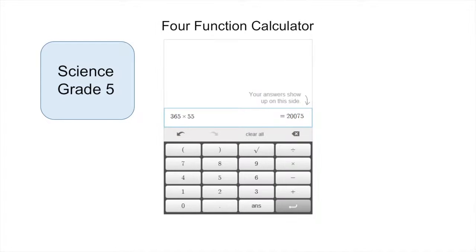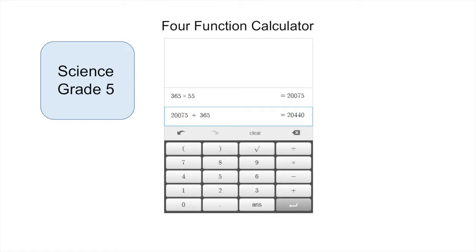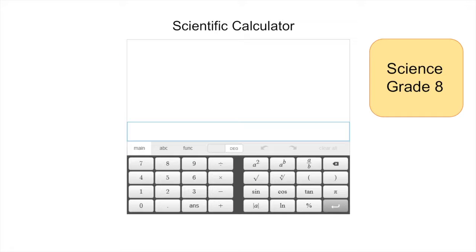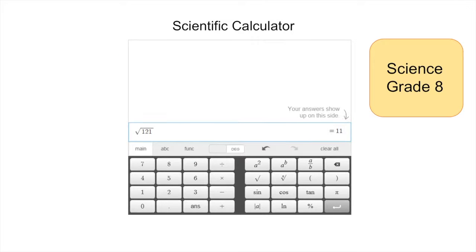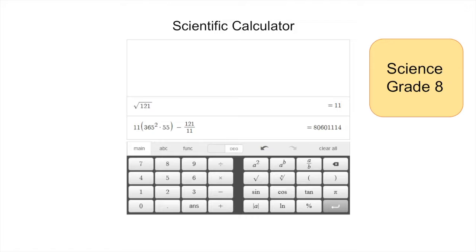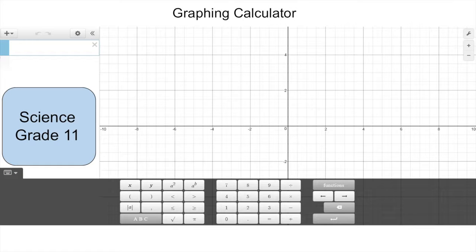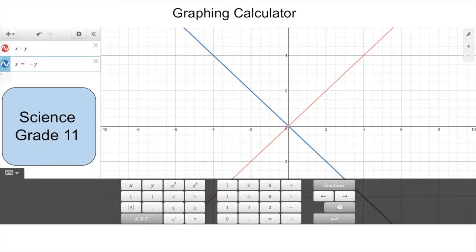The Desmos calculators will also be used for the statewide student assessments in science. In Connecticut, science tests are administered in grades 5, 8, and 11. Each of these grade levels will be using a different Desmos calculator. Grade 5 students will have access to the Desmos four-function calculator, while grade 8 students will have access to the Desmos scientific calculator, and grade 11 students will have access to the Desmos graphing calculator.